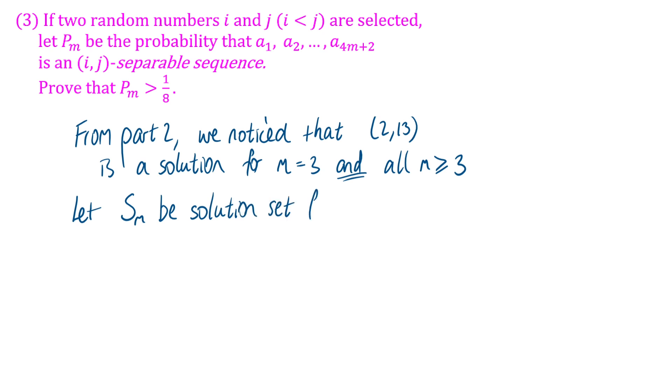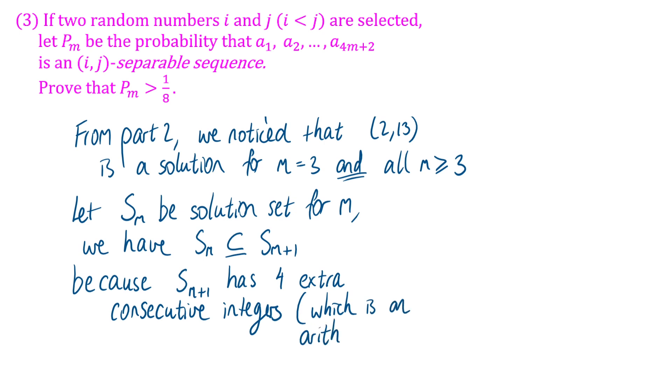Because all we're doing for larger values of m is adding on four terms. We just stick those four terms on the end, which obviously form an arithmetic sequence. So if we say let Sₘ be the solutions, the solution pairs (i,j) for one value of m, then any elements of Sₘ will also be elements of Sₘ₊₁. Because as m increases by one, we just get four extra terms, we stick those on the end of our sequence, and we have an arithmetic subsequence of four consecutive integers.